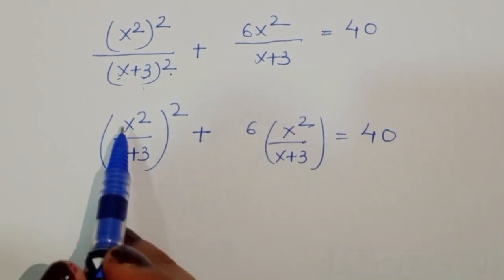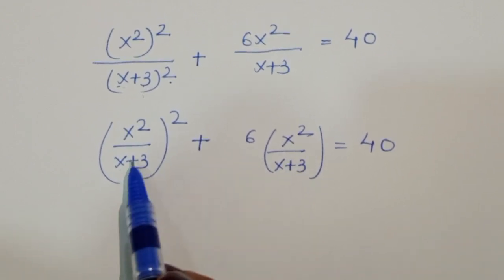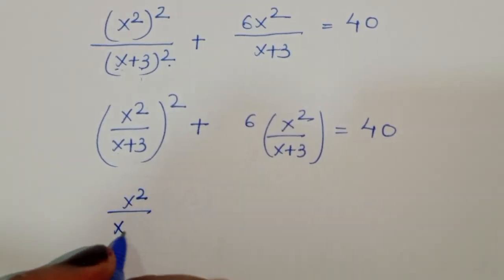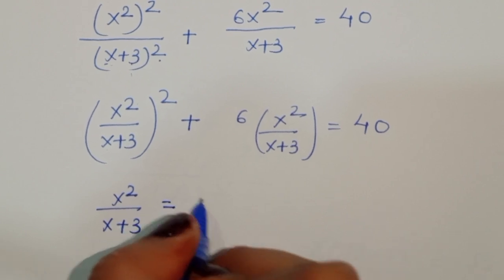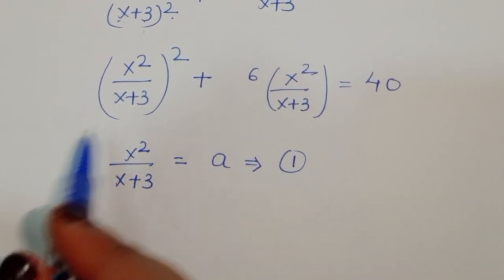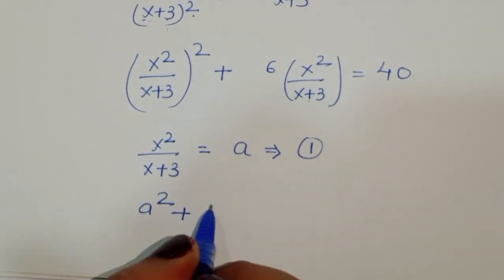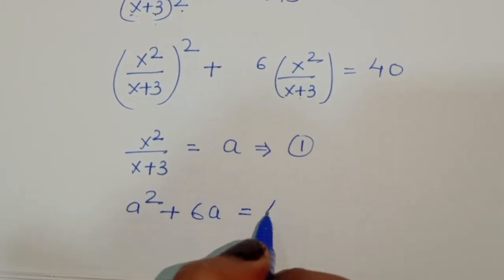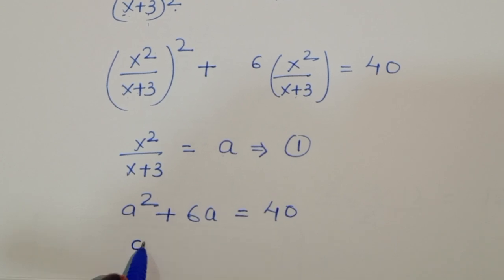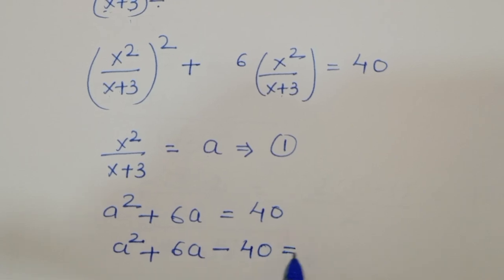With substitution a = x²/(x+3), the equation becomes a² + 6a = 40, or a² + 6a − 40 = 0.